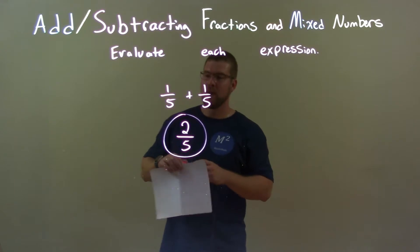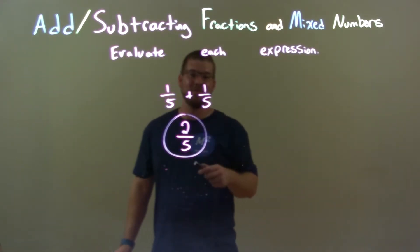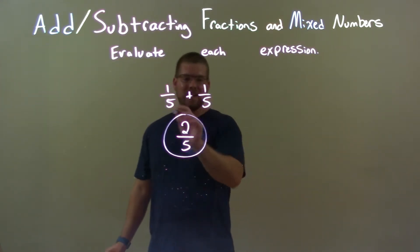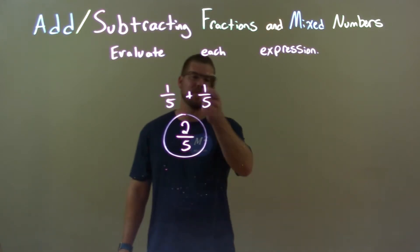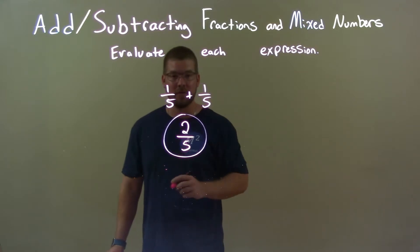Quick recap: we're given 1/5 plus 1/5. Well, we have 1/5 plus 1/5, which is just 2/5. Since they have the same base, that denominator, the 5 stays there, and we just add the numerator. 1 plus 1 is 2. So again, our final answer is just 2/5.